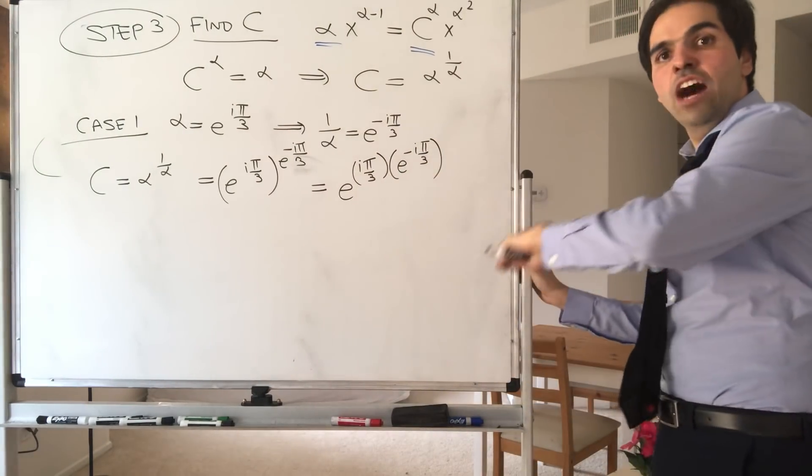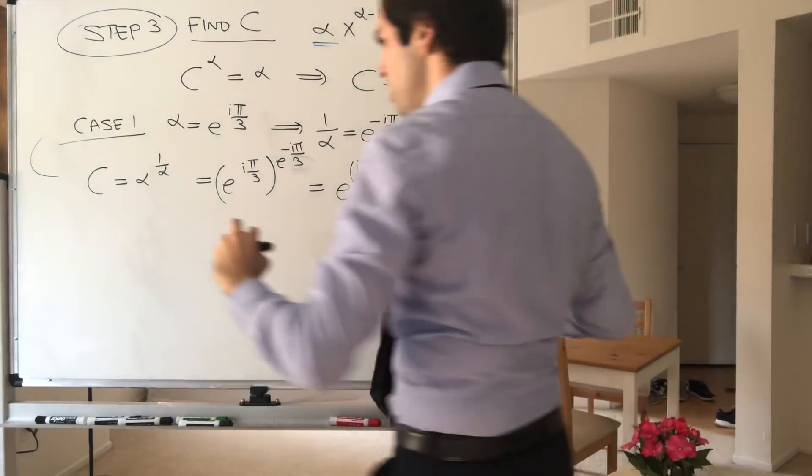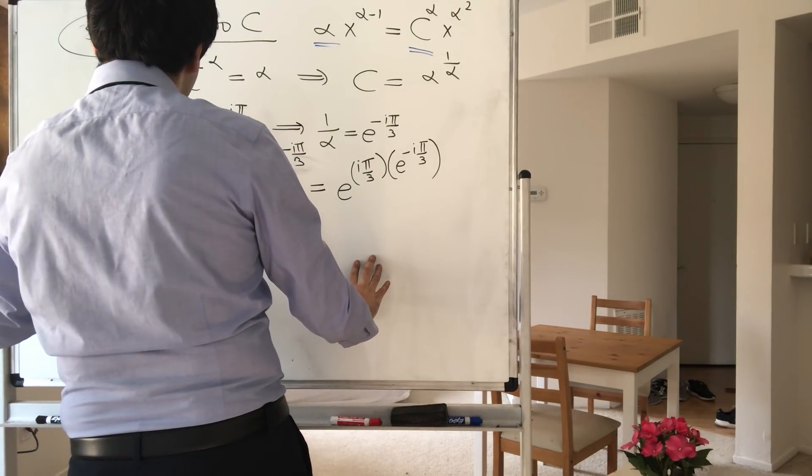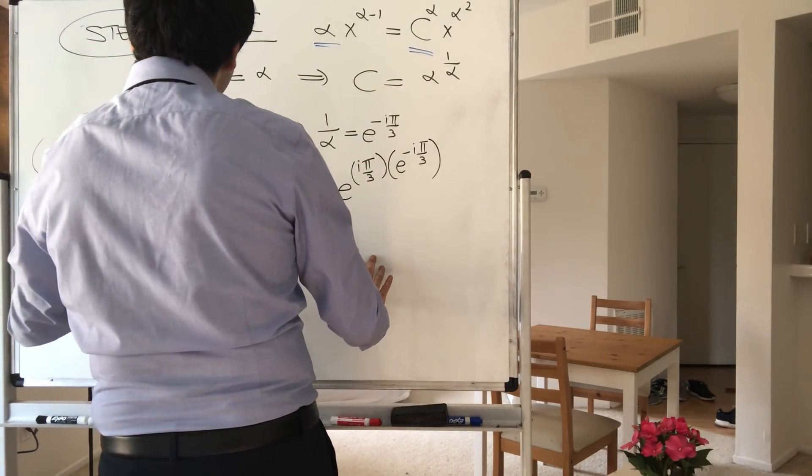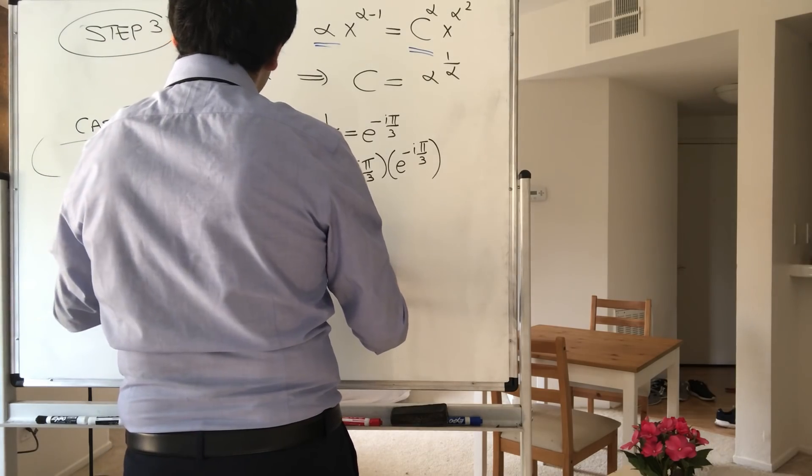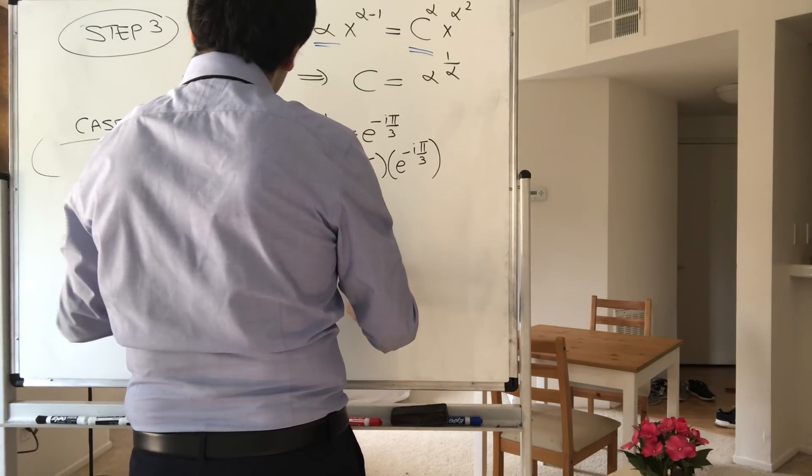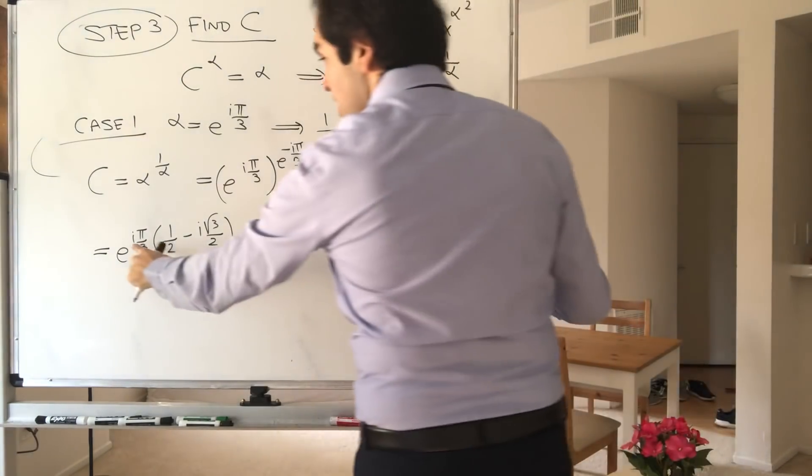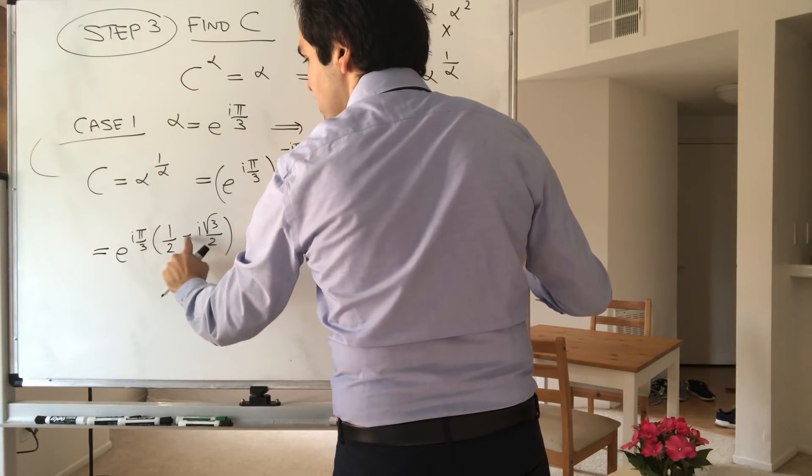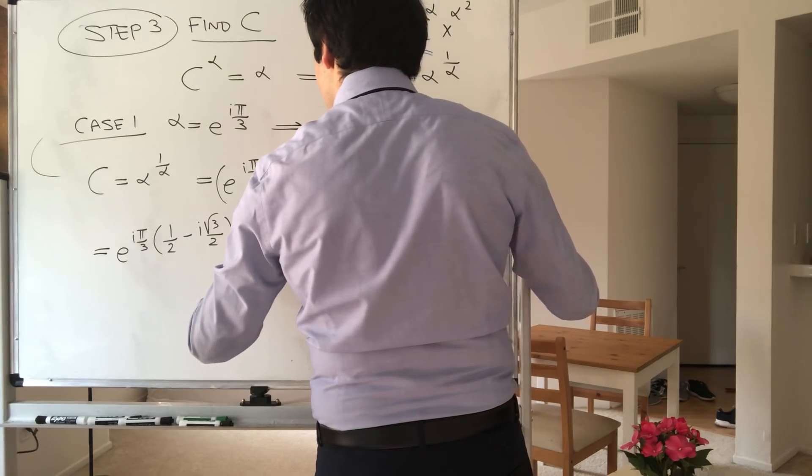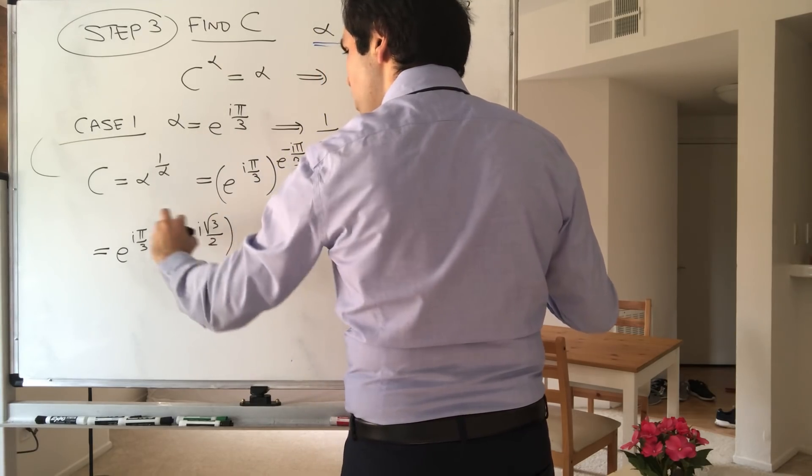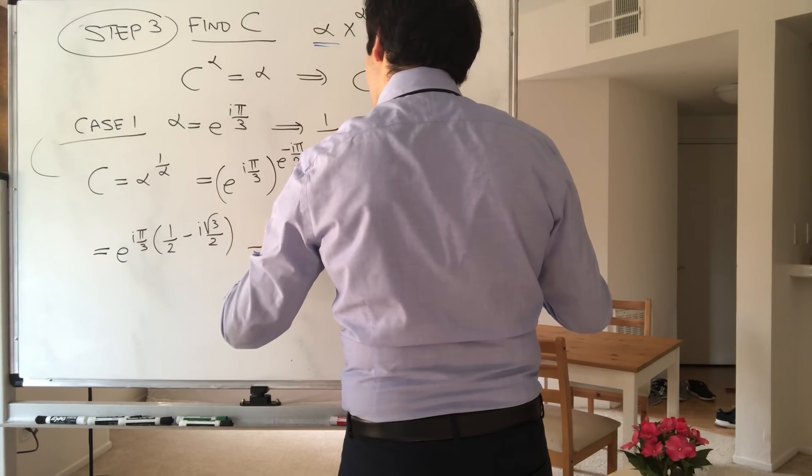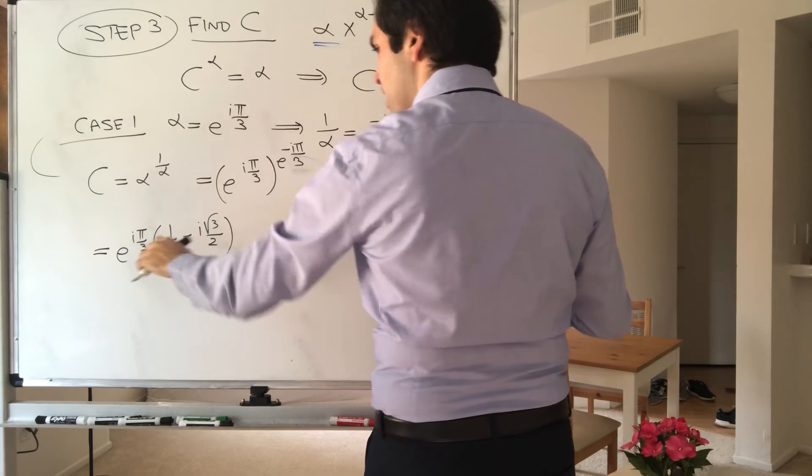But now remember, we're like down in the unit circle. So this is just e to the i pi over 3 times 1 half minus i square root of 3 over 2. And then let's just expand this out. So i times i is minus 1, times minus 1 becomes plus 1. So you get e to the square root of 3 pi over 6.